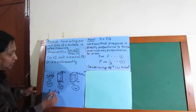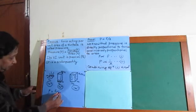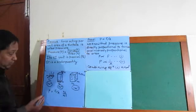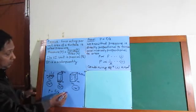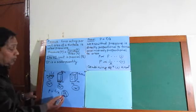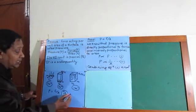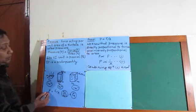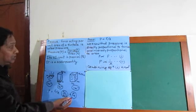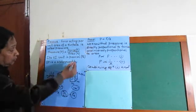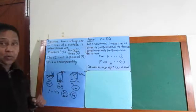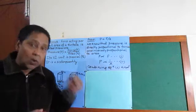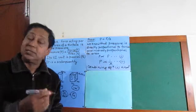Pressure equals force by area. If force is measured in Newton and area is measured in meter square according to the SI system, then the unit of pressure will be Newton per meter square. Newton per meter square is called Pascal, named after the scientist Pascal, and its abbreviation is Pa. Pressure is a scalar quantity.